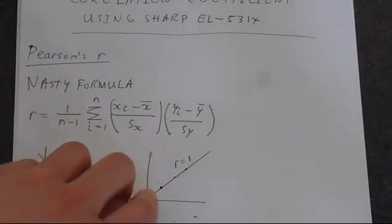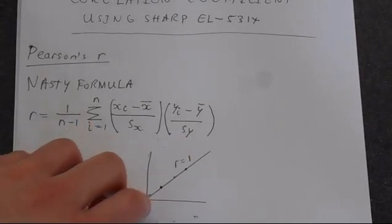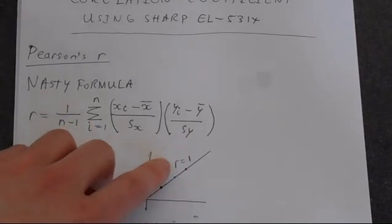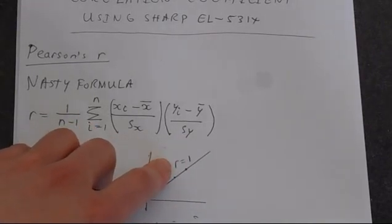If you've got a line going up the way with every single point on the line, you're going to get R equal to 1.